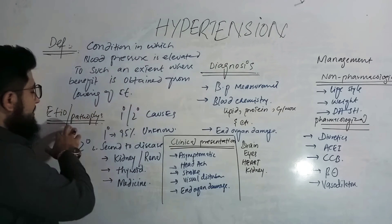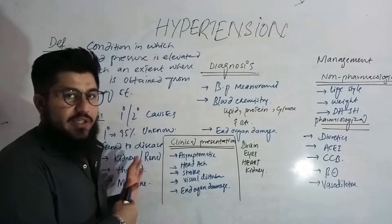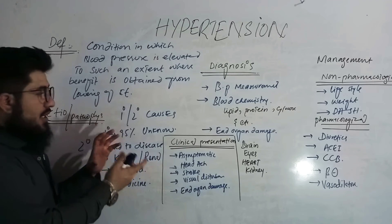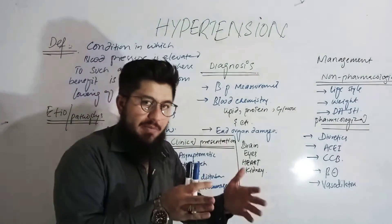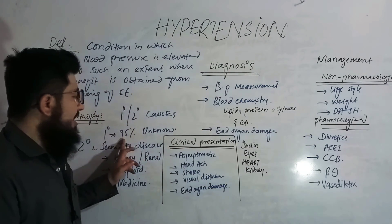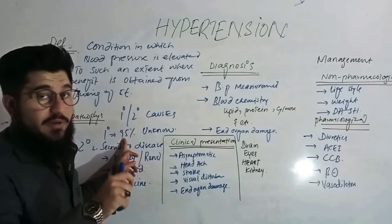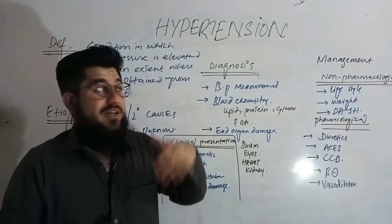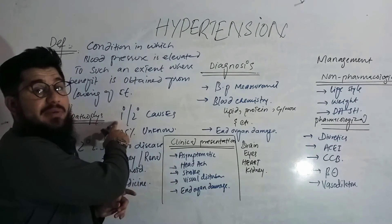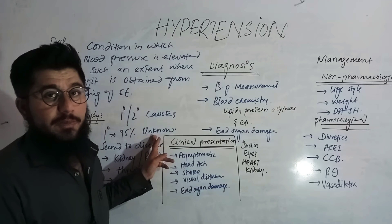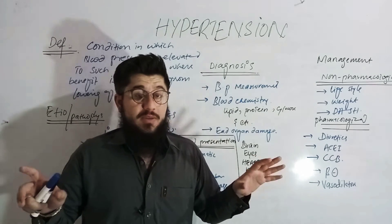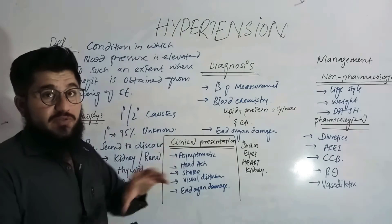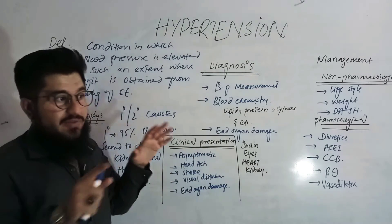Moving on to etiology and pathophysiology — detailed lectures are available, but I'll explain briefly. Generally, we have two causes: primary and secondary hypertension. Primary hypertension accounts for approximately 92–96% of cases, and in those cases the cause is unknown — we diagnose and label it as hypertension without identifying a specific cause.